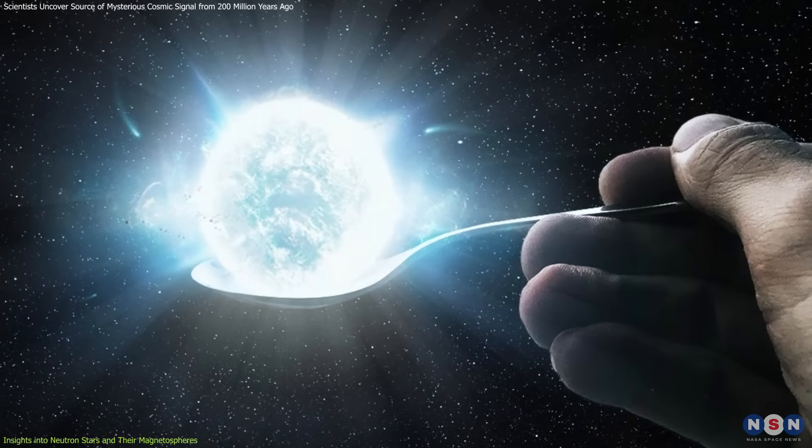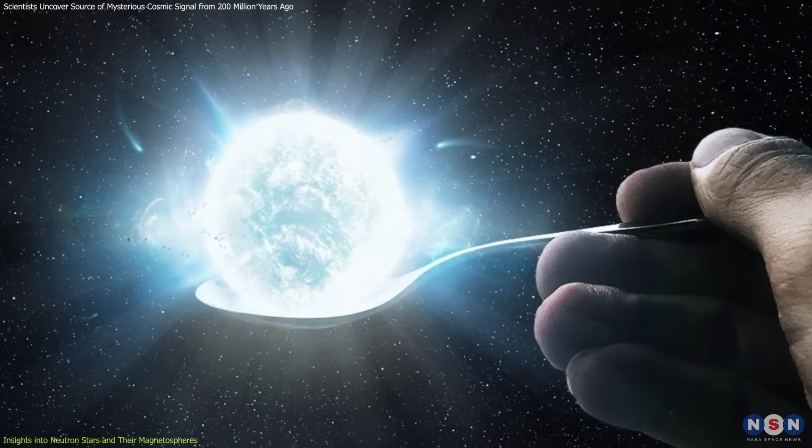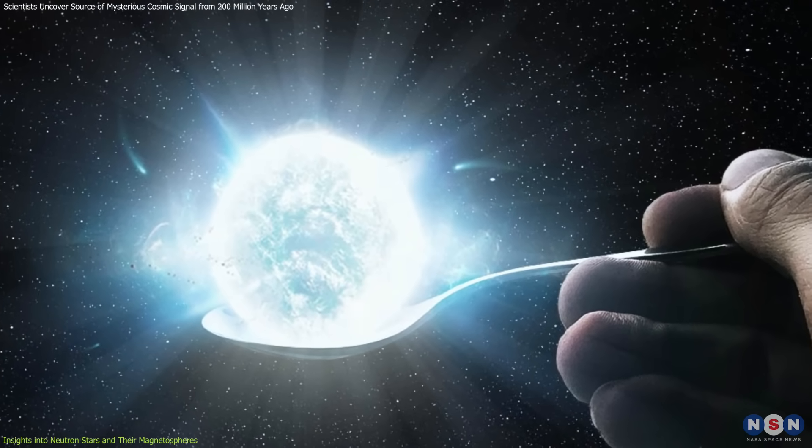To put this into perspective, a sugar cube-sized amount of neutron star material would weigh about a billion tons.